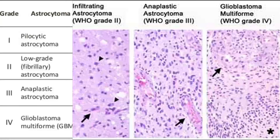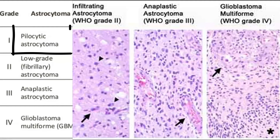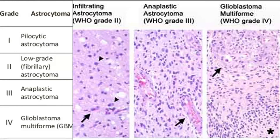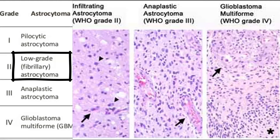We will start with astrocytoma. It is a benign tumour of the astrocytes and it is the most common glioma. You have four different grades. Grade one is pilocytic astrocytoma, which is slow growing and benign with good prognosis. Grade two is the low grade or fibrillary astrocytoma, which is benign as well but can evolve into malignant or higher grades.